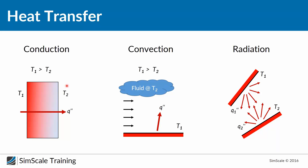There are basically three principles of heat transfer. Let's start with conduction. Imagine you have a block made of metal, with a heat source like fire on the left side and no heat source on the right side. T1 is larger than T2. After a certain time, the temperature will equalize, because heat can only be transferred from hotter to colder regions and it is transferred until equilibrium is reached. Conduction refers to heat transfer through solids. Then we have convection, which is a little bit different.